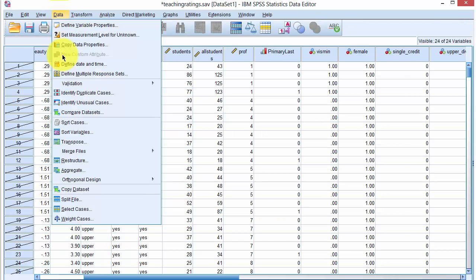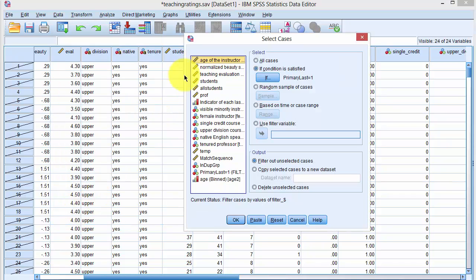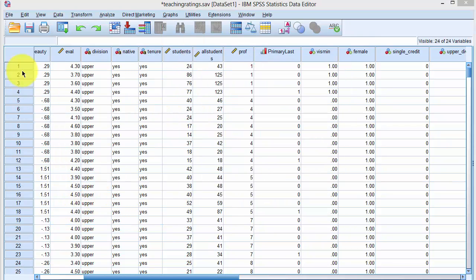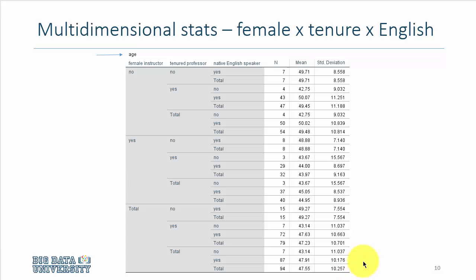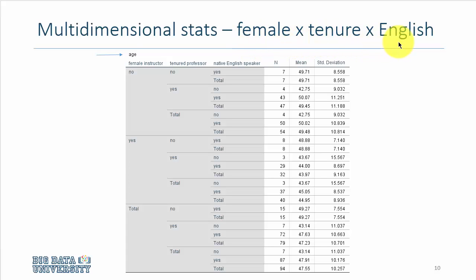To reset, we click Data, Select Cases, and say Select All Cases. The filtered-out observations re-enter the data set. We can also compute the same statistics — mean and standard deviation — but look at them from a multi-dimensional view. For example, what is the average age of a female professor who is tenured and speaks English as a native speaker?